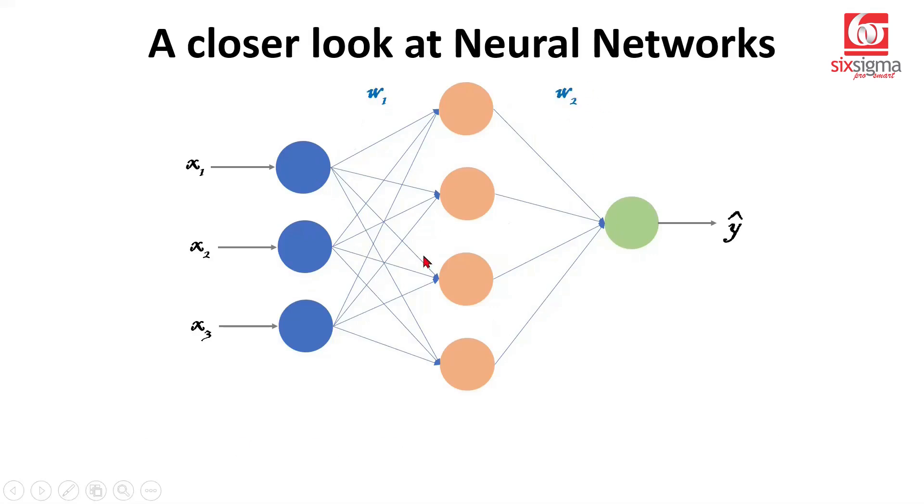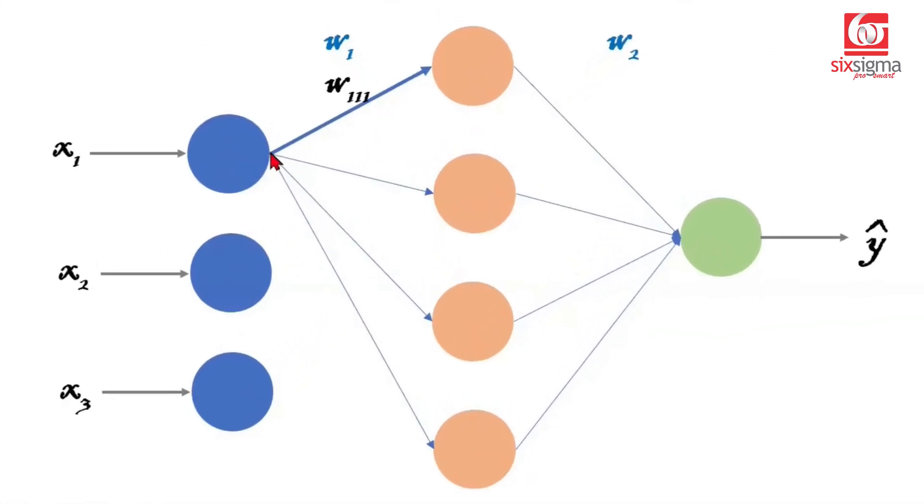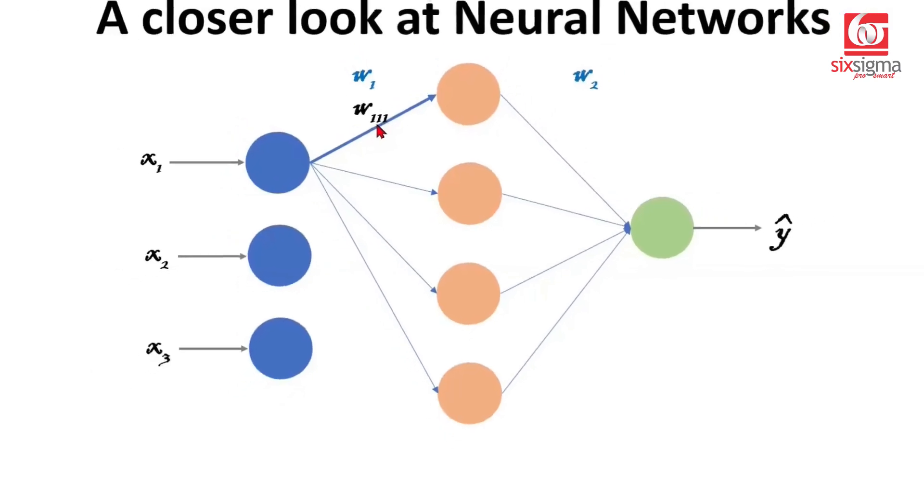Now let's look at these connections carefully. If we talk about this first connection between x1 and the first neuron of the hidden layer, we're calling it w1,1,1. This w1 would be common for all these weights that you'll have in this region. This 1,1 corresponds to head and tail. So it's the first neuron of the hidden layer and the first neuron of the input layer. That's why we are calling it 1,1.